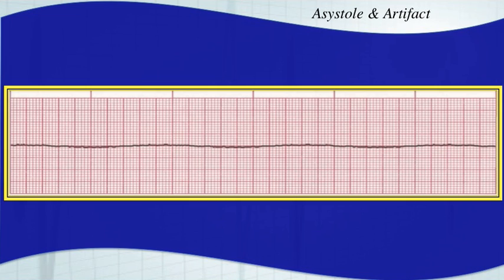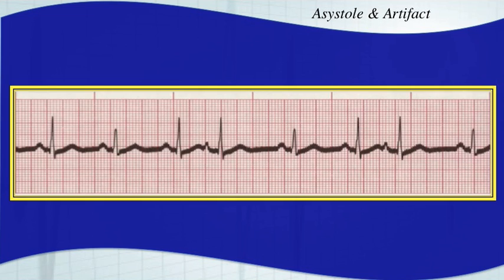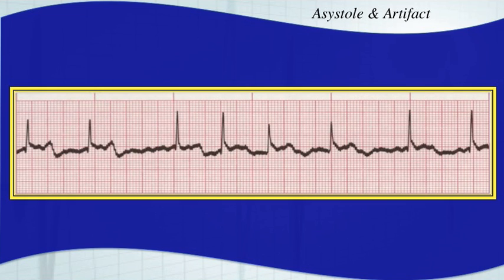Here we have an example of a different type of artifact. Looking at this, you can see it doesn't look like movement and it doesn't look like a loose electrode — that baseline looks very thick. That's 60-cycle artifact. You're going to check your electrical outlet and make sure you're not having any type of interference. Here's another example of 60-cycle artifact: that big thick baseline comes from that 60-cycle interference. You don't see 60-cycle interference as often as we used to.